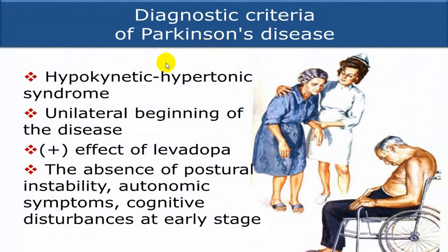Parkinson's disease diagnostic criteria: it is a hypokinetic hypertonic syndrome — because of increased tone there is decreased movement, called hypokinesia, and there is increased tone, called hypertonia. It always starts unilaterally and responds wonderfully to dopamine replacement therapy, that is levodopa. In early stages, there is absence of postural instability, autonomic symptoms, and cognitive disturbances — these three are not commonly seen at an early stage.